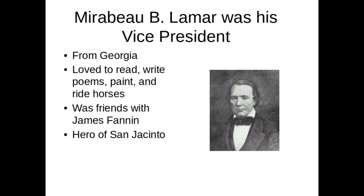Mirabeau Lamar was his vice president. Mirabeau Lamar was also a hero of San Jacinto. He was from Georgia, he loved to read hundreds and hundreds of books, he wrote poems — some of them were published in magazines — and he loved to paint and ride horses. One of his good friends was James Fannin. After Lamar's wife died, he came to Texas to see his friend James Fannin and decided he might just want to live there. He also thought he might want to help with the Texas Revolution, so he went back to Georgia to get some things together. On his way back, he found out that his friend James Fannin had been killed at the Massacre of Goliad. So he turned back around, came as fast as he could to Texas, and fought in the Battle of San Jacinto. It is written that his quick thinking and bravery saved a lot of people's lives that day. So not only was Sam Houston a hero of the Battle of San Jacinto — so was Mirabeau Lamar. So he became the vice president.